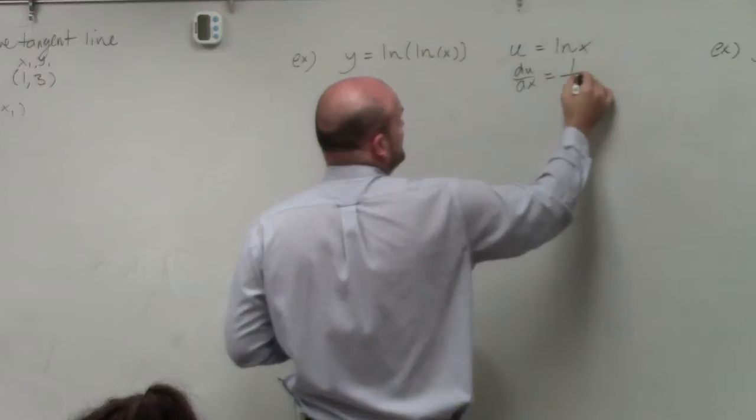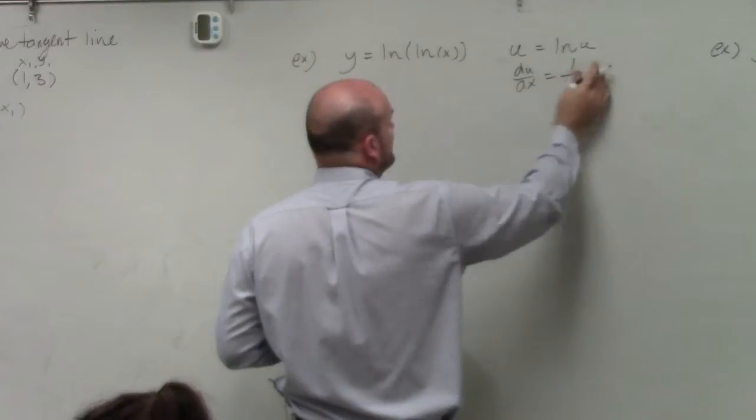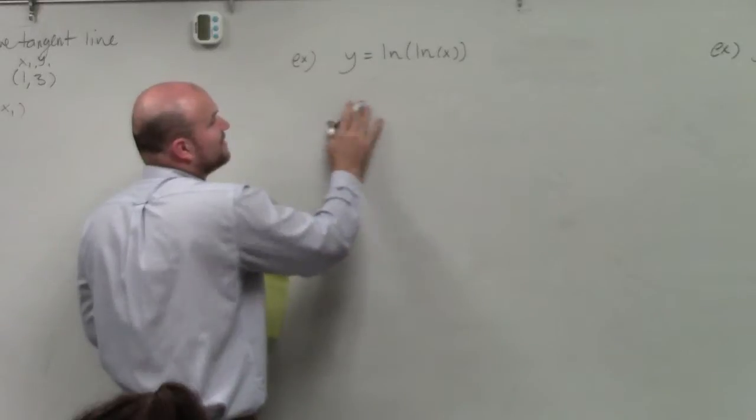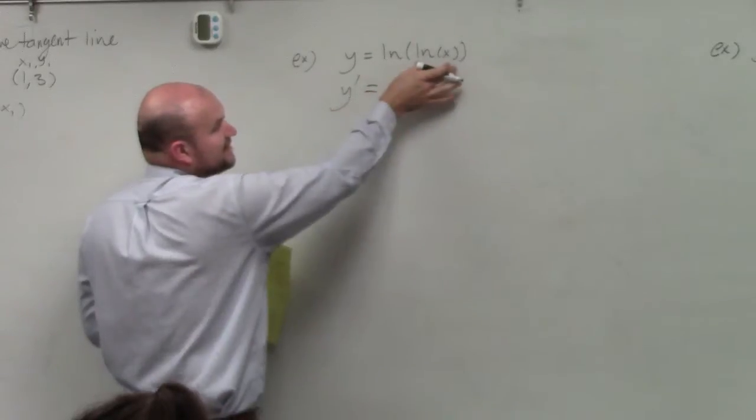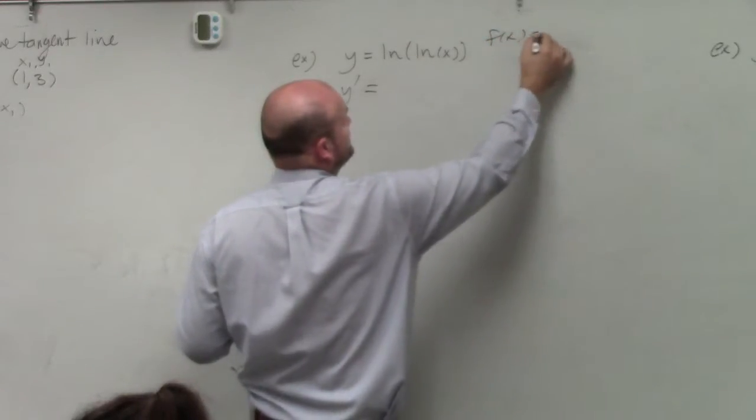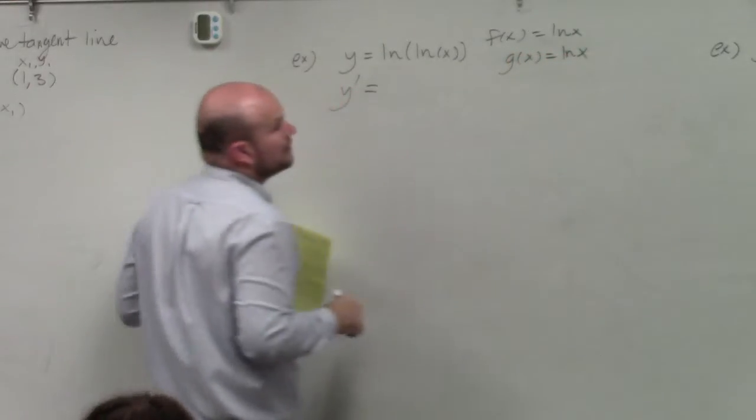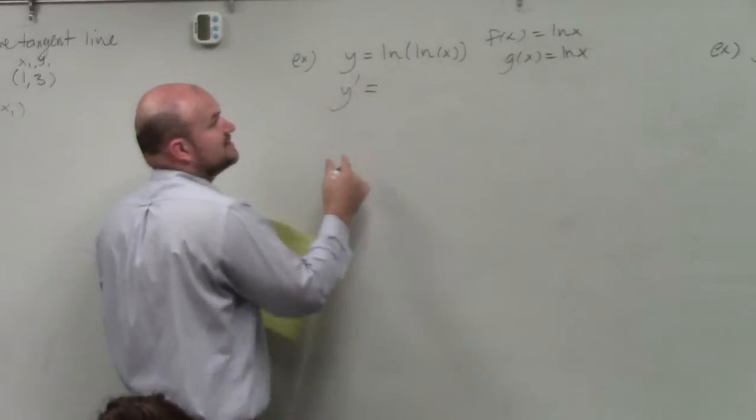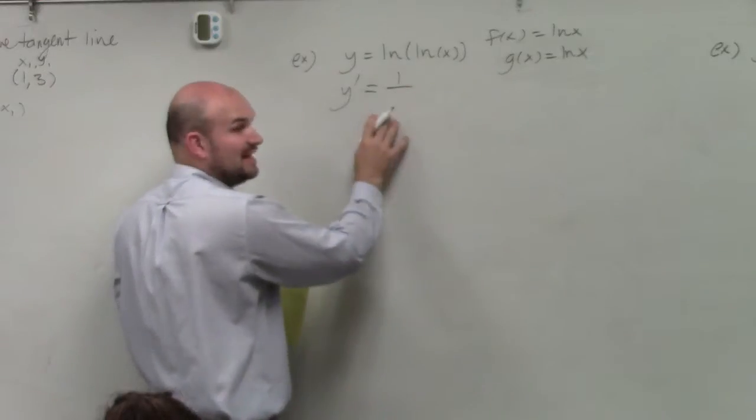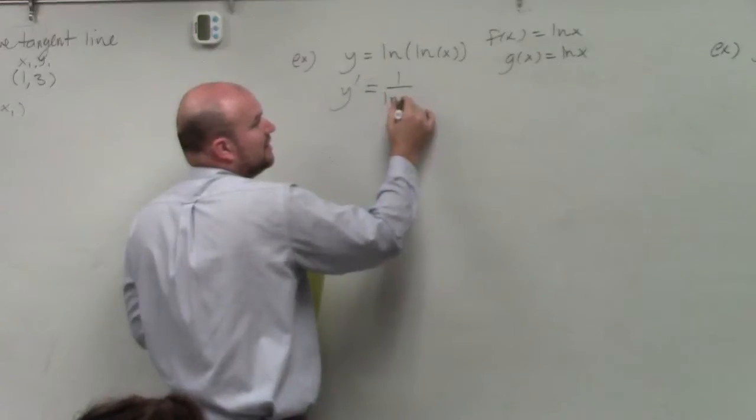So therefore, this is going to be 1 over ln of u. Let's go ahead and find this first derivative. You can see here is going to be our first value. If you actually, let's go back to our f of x and g of x. So if I'm going to take the derivative, I'm going to take the derivative of my outside function f of x, which is 1 over x. But then I'm going to plug in, remember,